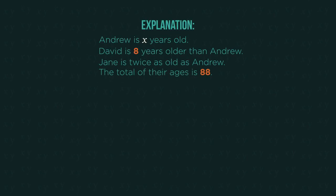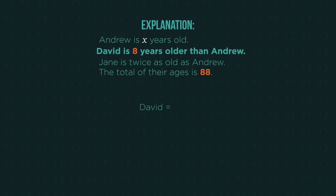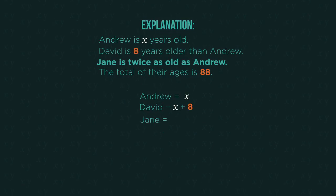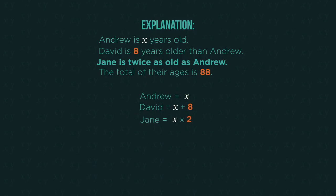We can even have three or more statements involved. How could we write David's age in terms of X? David is Andrew's age X plus 8 years. What about Jane's age in terms of X? Jane is Andrew's age X doubled, so times 2, which we write as 2X.